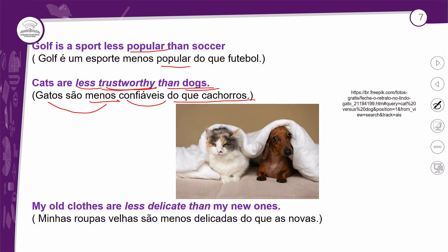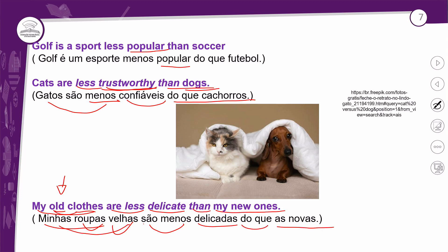My old clothes are less delicate than my new ones. Minhas roupas velhas são menos delicadas do que as novas. Perceba que 'old' também é um adjetivo. Em inglês o adjetivo sempre vem antes do substantivo — por isso 'old clothes'. No português geralmente o substantivo vem antes do adjetivo — 'roupas velhas' — mas também é possível 'velhas roupas'. LESS + delicate + THAN my new ones.